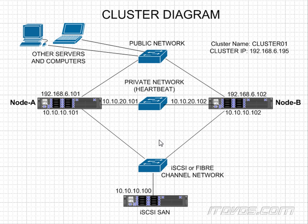Now, we're also normally going to have a couple different types of networks. In general, we have a public network — this is the network that the clients are going to use to access the clustered application, whether it's SQL Server or a file share. We've got a heartbeat network, which is what our cluster nodes use to communicate back and forth to each other and determine if a node is up or down — that's how they know to failover. And then we normally have some type of storage network: if it's iSCSI, this is going to be an Ethernet network; if it's Fibre Channel, it's going to be a fibre network with a fibre switch; if it's a SAS array, these are going to be SAS cables directly connected from node A to the SAS array to node B. So those are the basic concepts of a failover cluster and how it works, and we're going to see all the different scenarios with Windows Server 2012 R2 clustering.